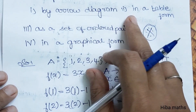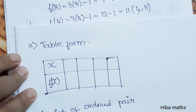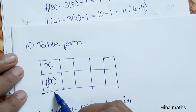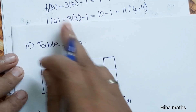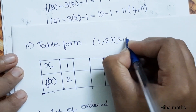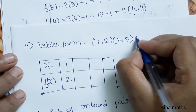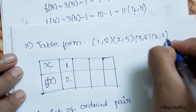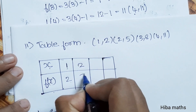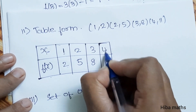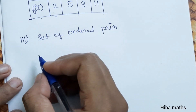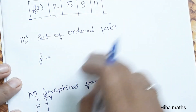Next is the tabular form. In the table, x values are listed with their corresponding F of X values: x = 1 gives F(x) = 2. From that we get the ordered pairs. The ordered pairs are (1,2), (2,5), (3,8), (4,11).